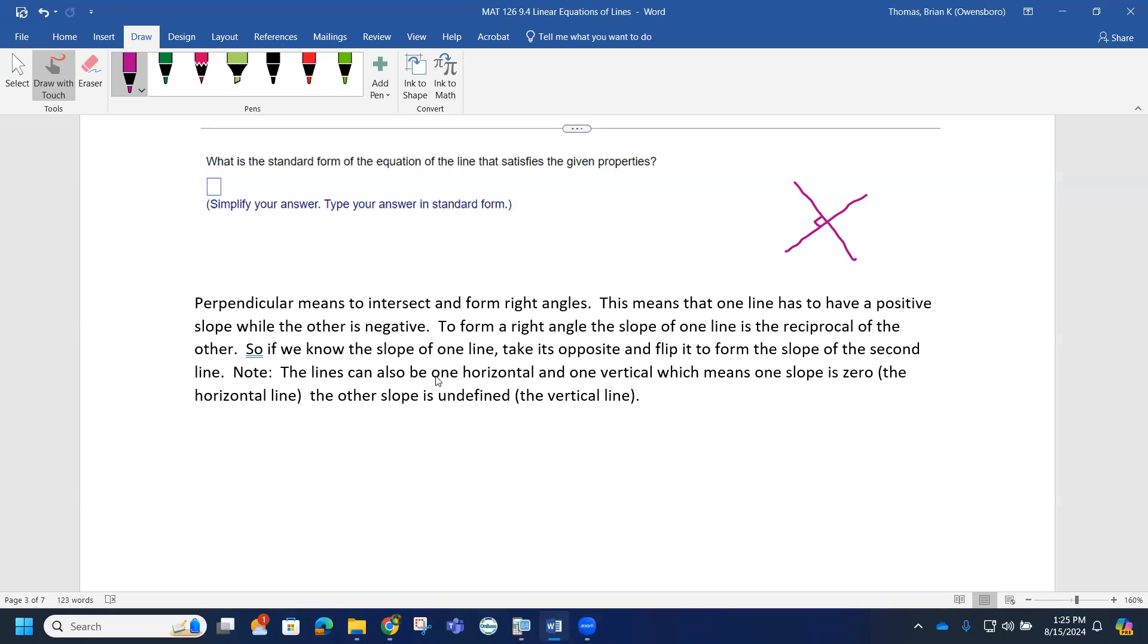Now, if the lines, if one is horizontal and one is vertical, notice how one slope is zero, which is the horizontal line, and the other slope is undefined, which is vertical. So that's a little bit different story. But if we're dealing with horizontal and vertical lines, there's not going to be nearly as much work involved.